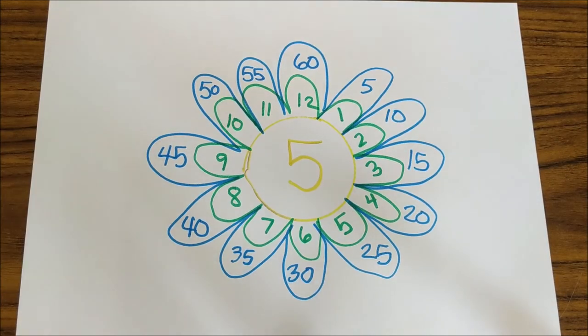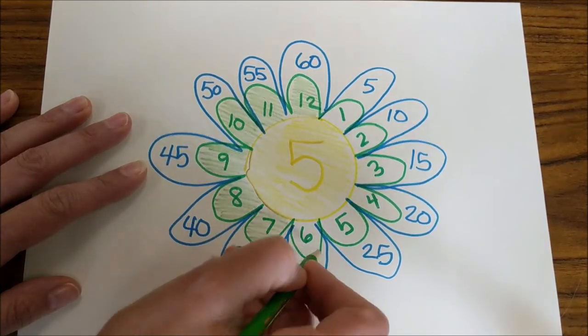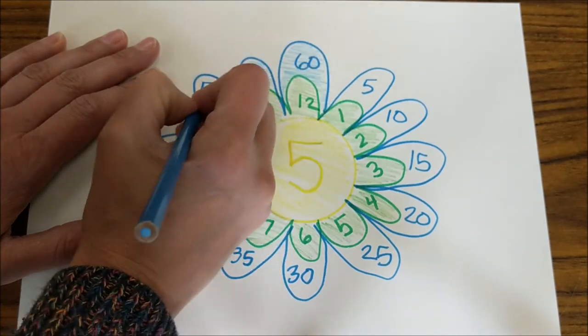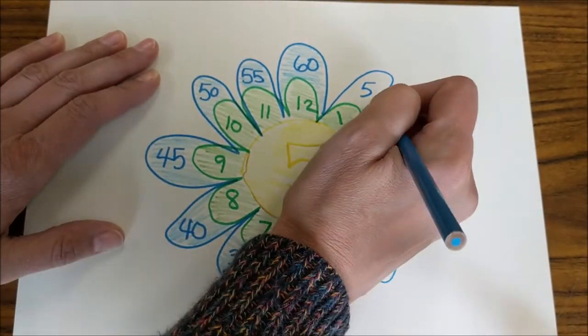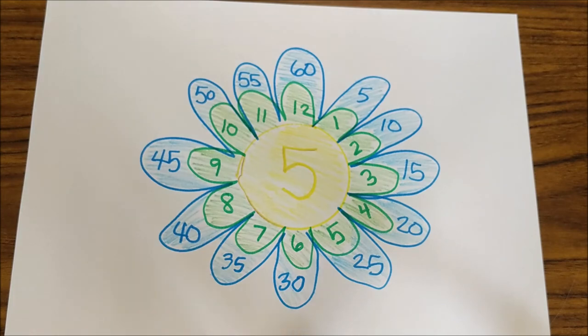Then I'm going to just make this one a little more colorful so that it's pretty. Now if you look at your flower, you can see that all of the multiplication facts you've been practicing are there. 5 times 1 is 5, 5 times 2 is 10, 5 times 3 is 15, 5 times 4 is 20, and so on.